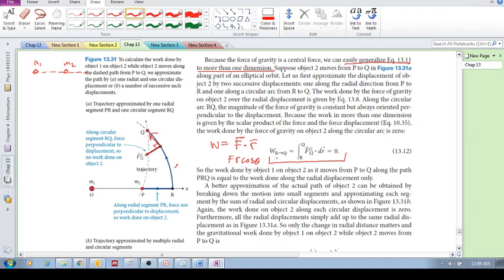So that's why it says the work done from R to Q, from that point to that point, is zero. So the point that they're trying to make here in this page is that as it's moving in two dimensions, it's got these two components. It's got a radial component, a radial component from P to R, and it's got this circular component from R to Q. And the only component where there's work done is this radial component.